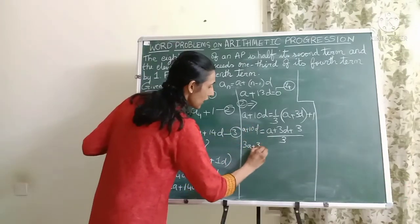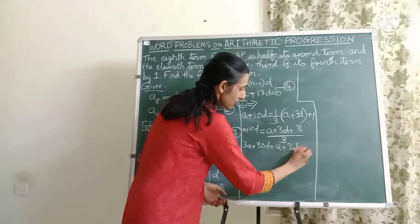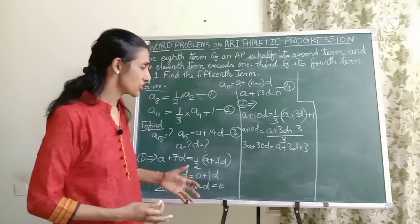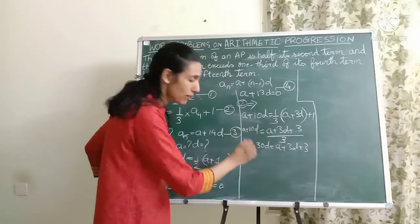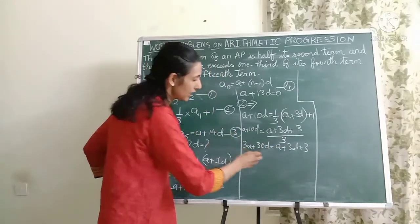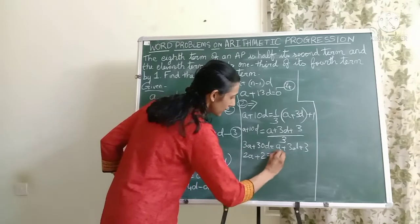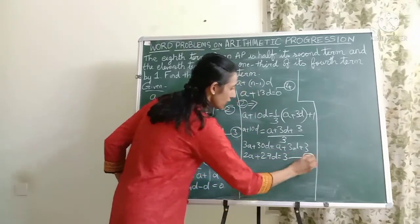This is all algebra. Now just bring all the terms to the other side. So you'll get 3A minus A which is 2A, 30D minus 3D, so you'll get plus 27D equals 3. Let me call it as the fifth equation.